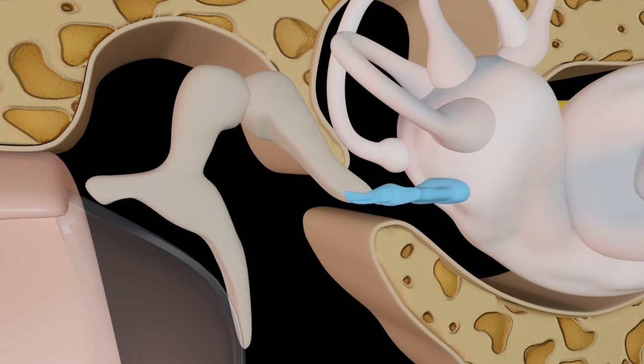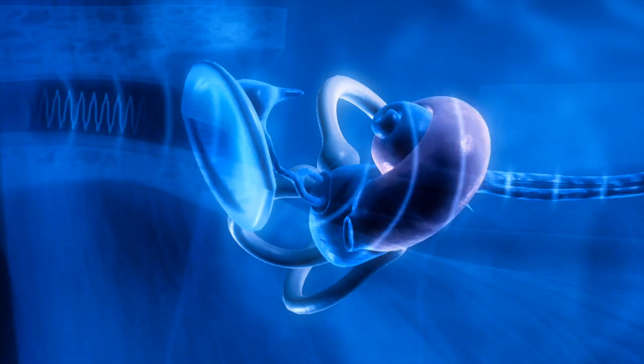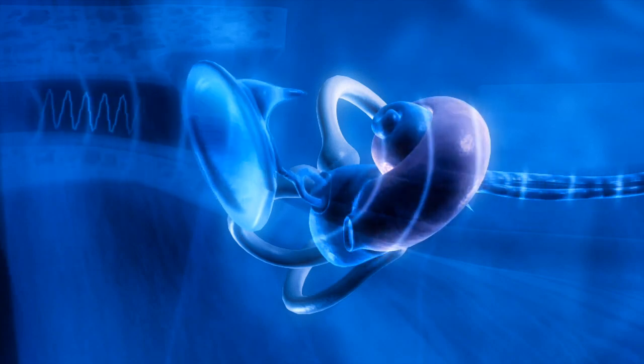Auditory nerve transmission. Auditory nerve, vestibulocochlear nerve. Electrical signals are carried by the auditory nerve to the brain.